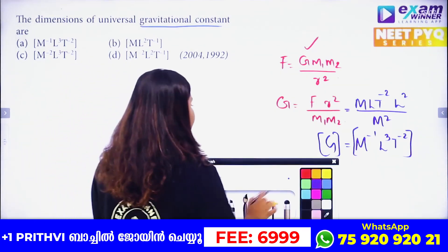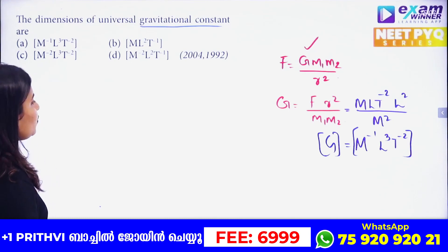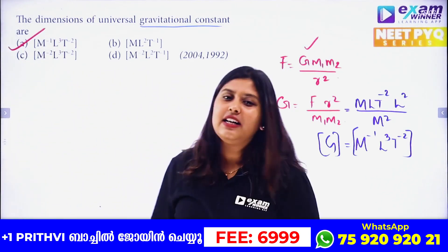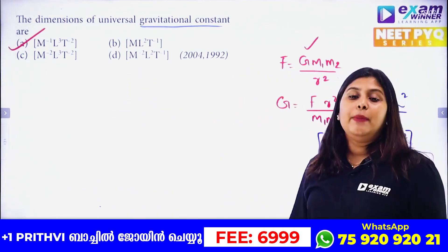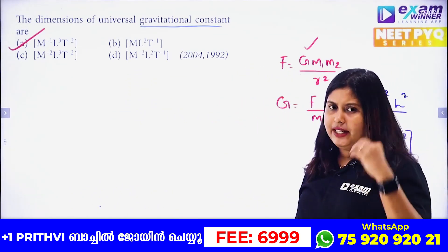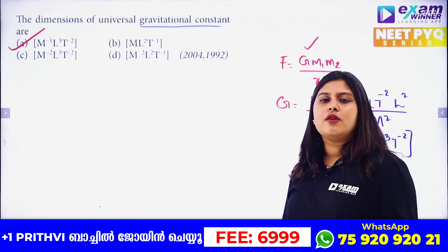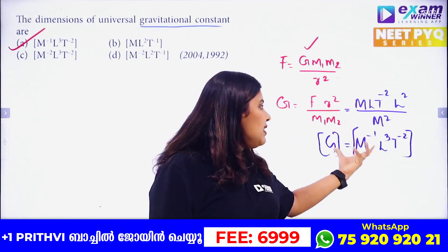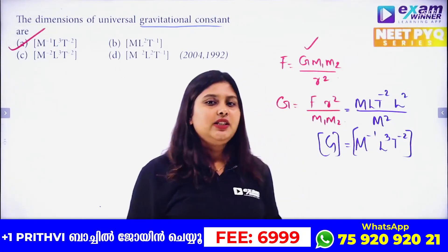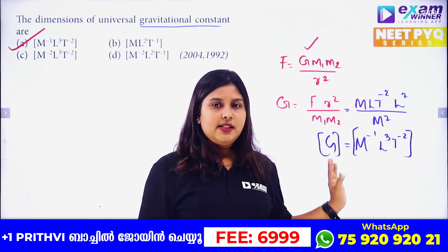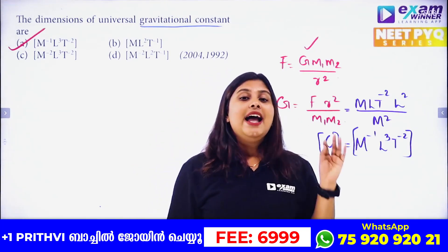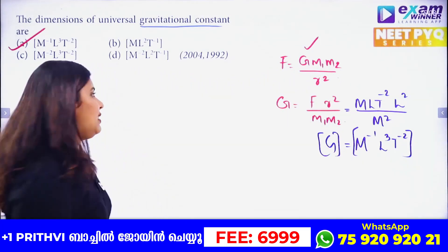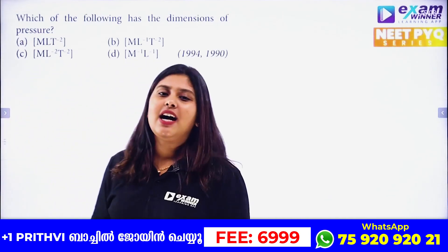The dimension of the gravitational constant G is M⁻¹·L³·T⁻². Option A is the right answer. Even if you go to a new exam and are asked the dimensions of the gravitational constant, the answer is M⁻¹·L³·T⁻². That is the right answer. Next is an important question: the dimension of pressure.